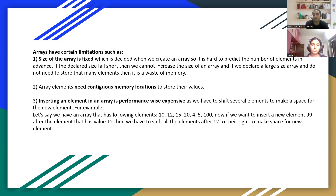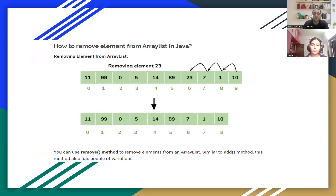Arrays also need contiguous memory locations to store values, which is expensive performance-wise. Another issue: if you have to remove an element, say 23, you have to shift every subsequent element — 7th to 6th location, 8th to 7th, 9th to 8th, and so on — so the entire structure gets restructured. These are the problems with respect to arrays. Okay, what are the different types of linked list?